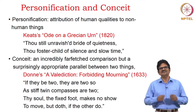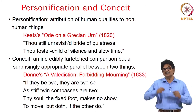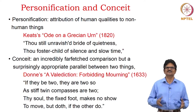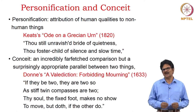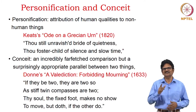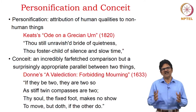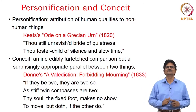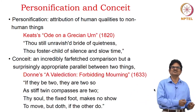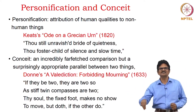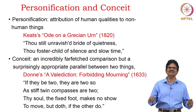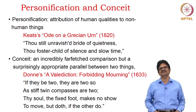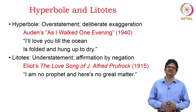Let's examine conceit. It is also a kind of comparison, but an incredibly far-fetched comparison — surprisingly appropriate and showing a parallel between two things. One of the masters of conceits is John Donne. His poem 'A Valediction Forbidding Mourning' has this typical conceit: there is a compass with two legs, and the poet compares himself and his beloved to these two legs — one leg standing still, another moving around. 'If they be two, they are two so, as stiff twin compasses are two. Thy soul, the fixed foot, makes no show to move, but doth if the other do.' One leg may remain in one place, but when the other moves, the fixed foot also moves along with that.